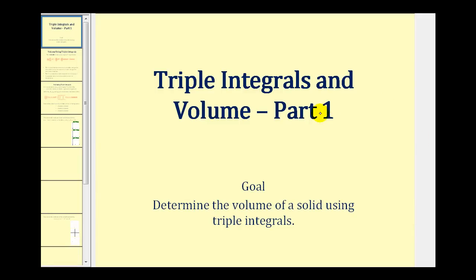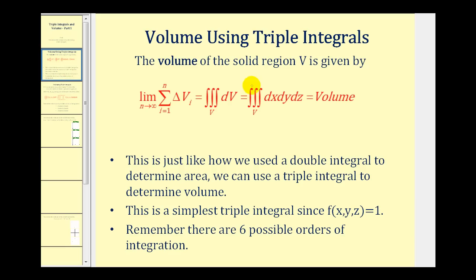Welcome to the first video on triple integrals and volume. We can determine the volume of a solid region V by using a triple integral over the region V, integrated with respect to V. This means if we let the integrand equal the most basic function f(x, y, z) = 1 and rewrite dV as dx dy dz or some other order of these three differentials, and let the limits of integration represent the solid V, this will give us the volume of the solid. This is very similar to how we use a double integral to determine area — we can now use a triple integral to determine volume.